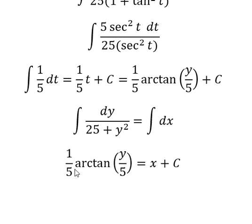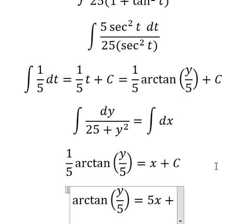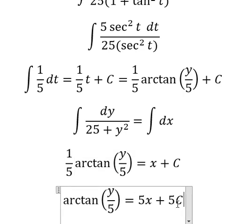Now we multiply both sides by 5, and we have 5x plus 5c. We know that c is the constant, so 5 with c, you got c.